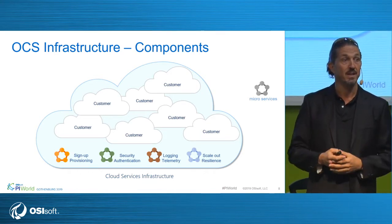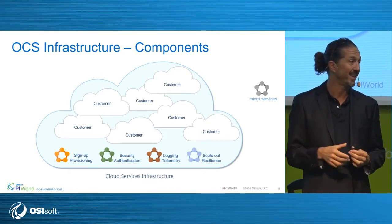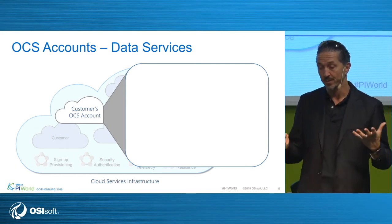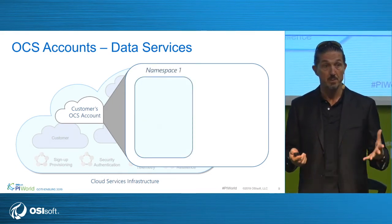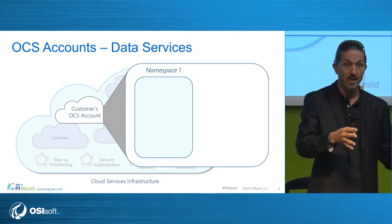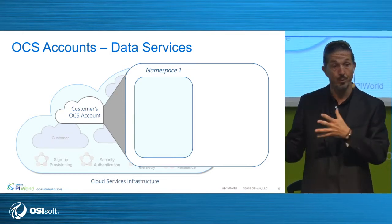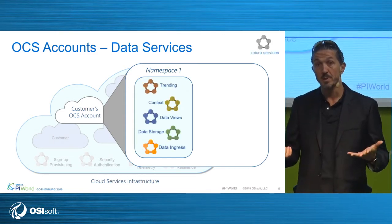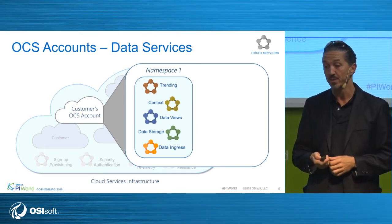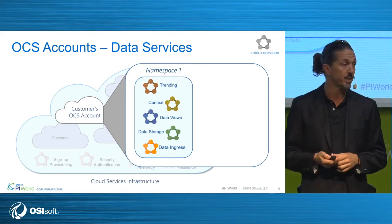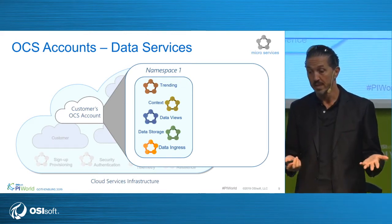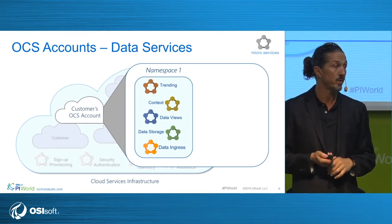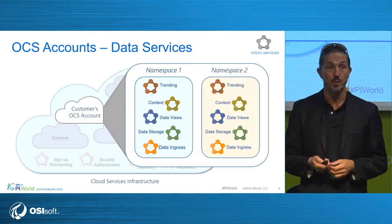The more customers we have, we just go to 11 — as easy as that to get more customers onboarded. Within a customer account there's also the concept of a namespace, which is really an environment for data to be isolated — mostly for development or production work, or to go from one region to another to make sure data stays in-country. Within those namespaces we have data services for data ingress from PI and from OMF applications, storage, and then expanding the value with data views. We'll show you trending again today and can have more namespaces in different regions.